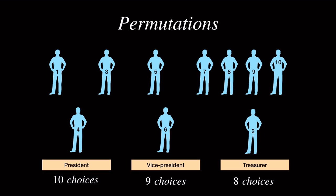So, for each of the 10 choices of the president, there are 9 choices for the vice president. And for each of the vice president, there are 8 choices for the treasurer. So, we can multiply the choices together, giving 810 possible choices.